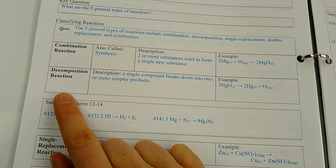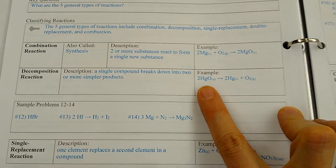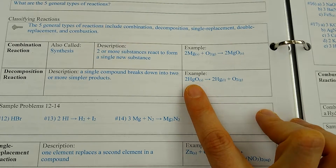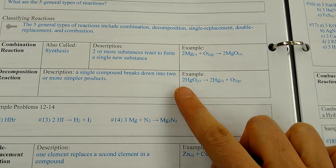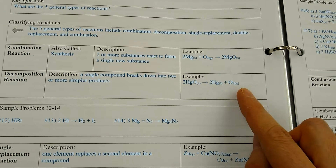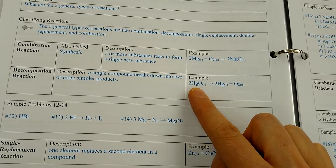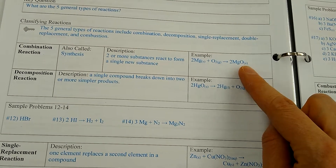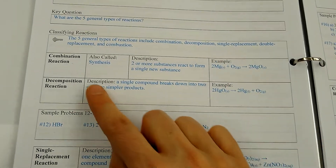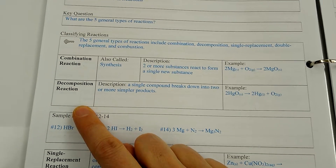Then we have the opposite: decomposition reaction. If I ask you what a tree is doing in the woods when it's decomposing, you'll tell me it's breaking down — same thing here. A compound is going to break down into either the elements it's made of or simpler compounds. The easiest way to recognize it is you only have one substance before the arrow. It's the only type of reaction that has one substance by itself before the arrow, just like synthesis is the only one where you have one substance by itself after the arrow. Decomposition: only one thing before the arrow, and it's breaking apart.